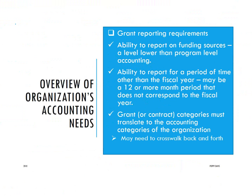The grant reporting requirements are at the funding source level, which is a level lower than the program. A key thing that can trip a lot of people up is that the grant reporting period may be for a totally different period of time than the fiscal year of the organization. For example, if the organization is on a June-to-June fiscal year, the funder could be on a calendar year and require you to report on the calendar year. A funder may also fund you for an odd period such as an 18-month or 24-month grant.